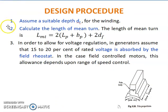There are 15 steps to be followed while designing shunt field winding. The first step is to assume a suitable depth Df for the winding. This information can be obtained by referring to the design data handbook, which each manufacturer supplies. By referring to that handbook the designer can decide the depth of winding.